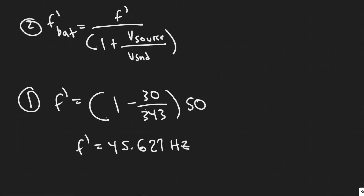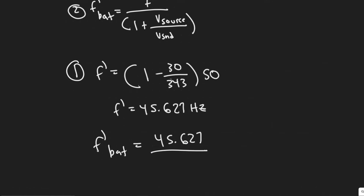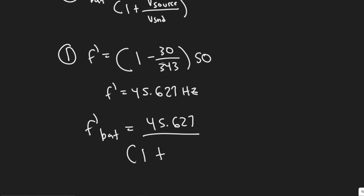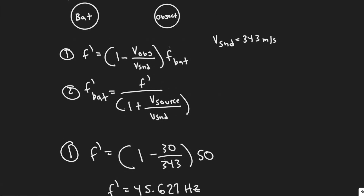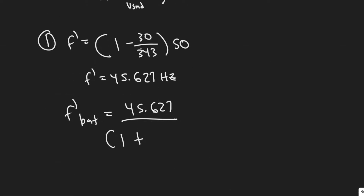Now what we want to find is the frequency the bat is going to receive based off that. So we take our frequency of the object, 45.627 kilohertz, divided by (1 + 30/343), since the source — which is now the object — is moving away. So we have 45.627 divided by (1 + 30/343), and when you do this you get 41.95 kilohertz.